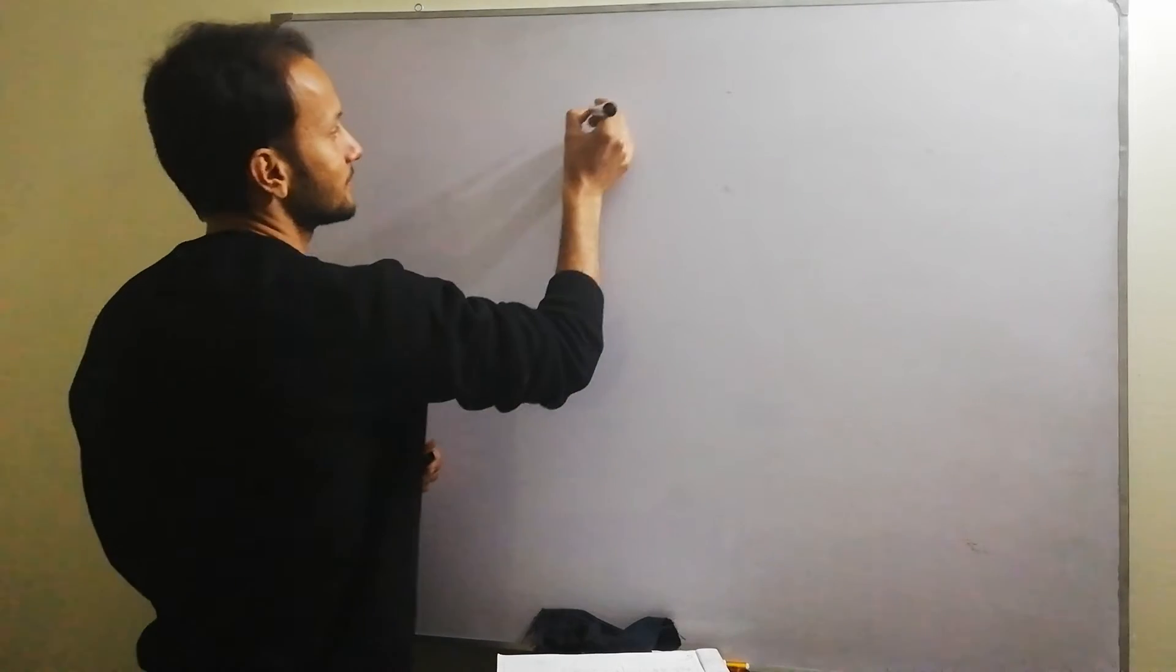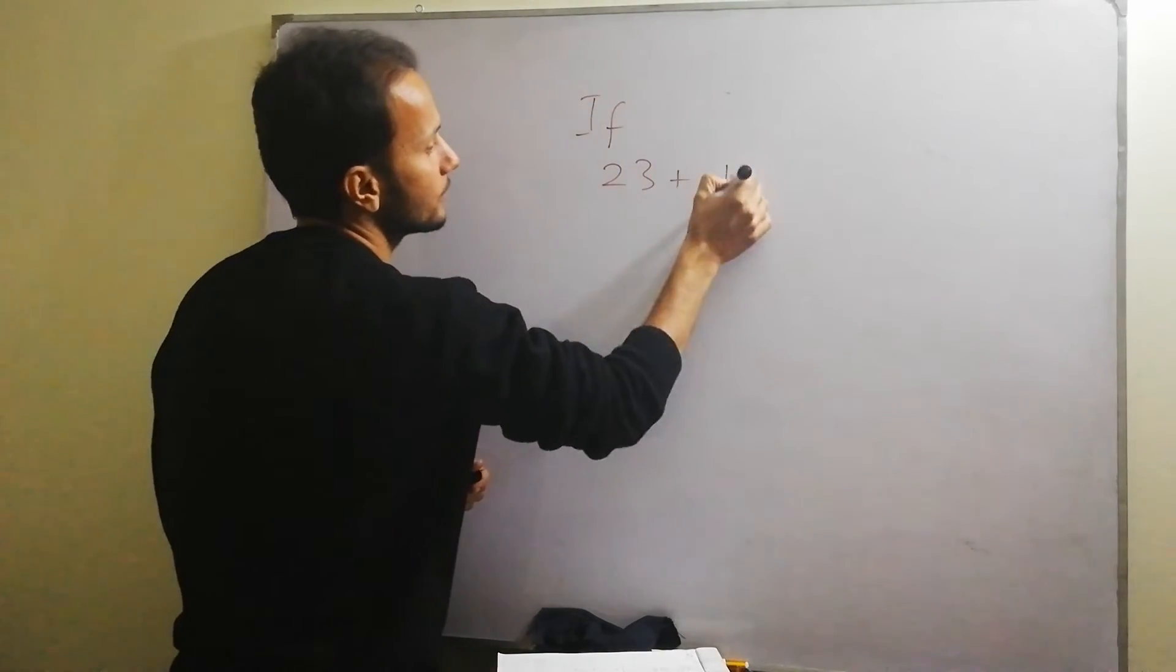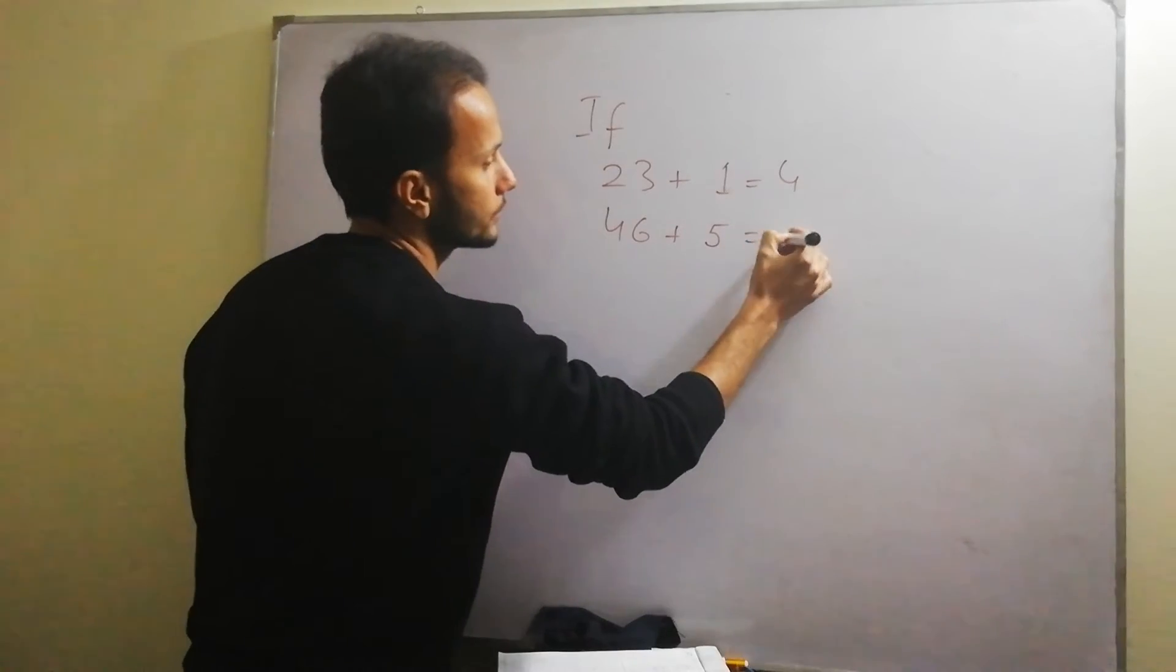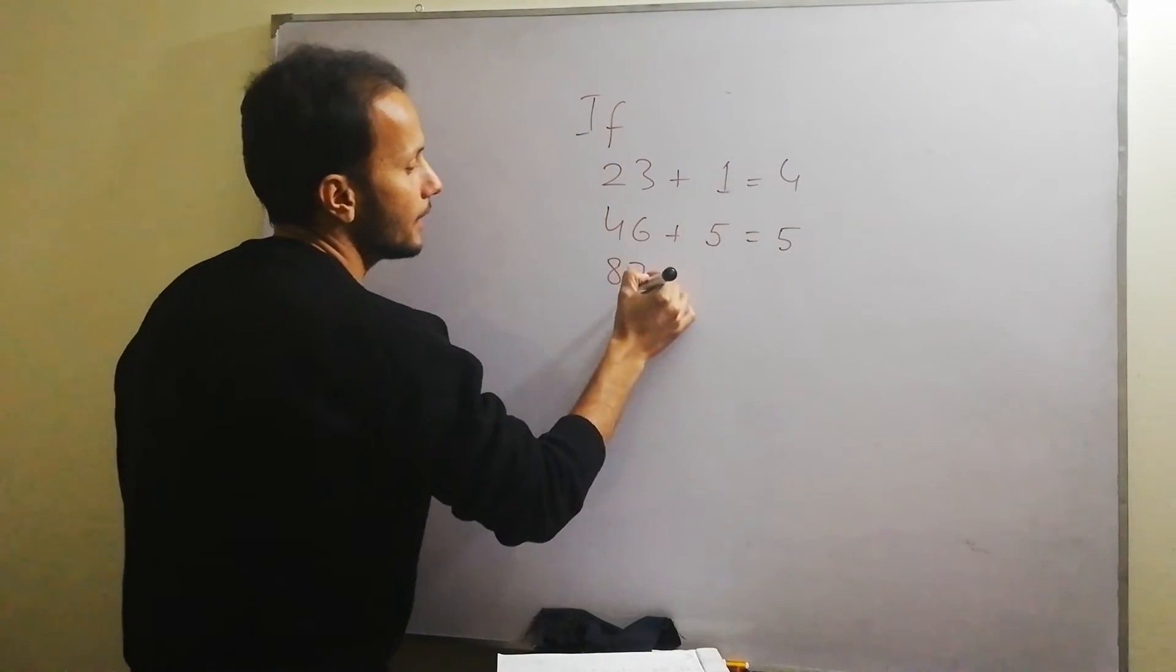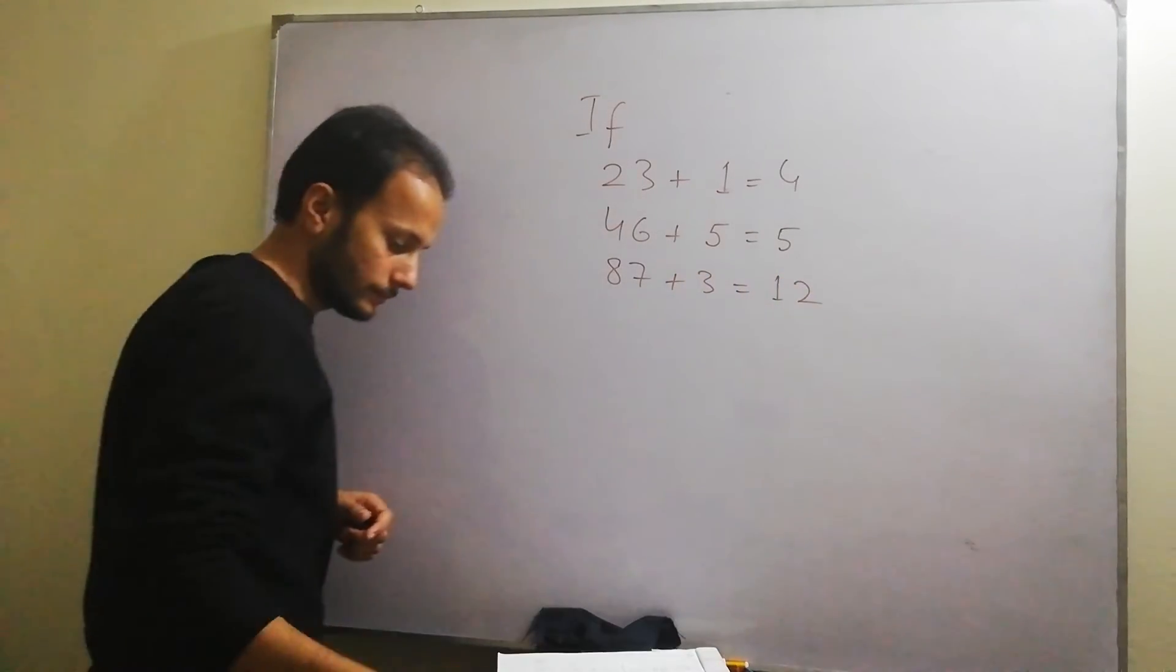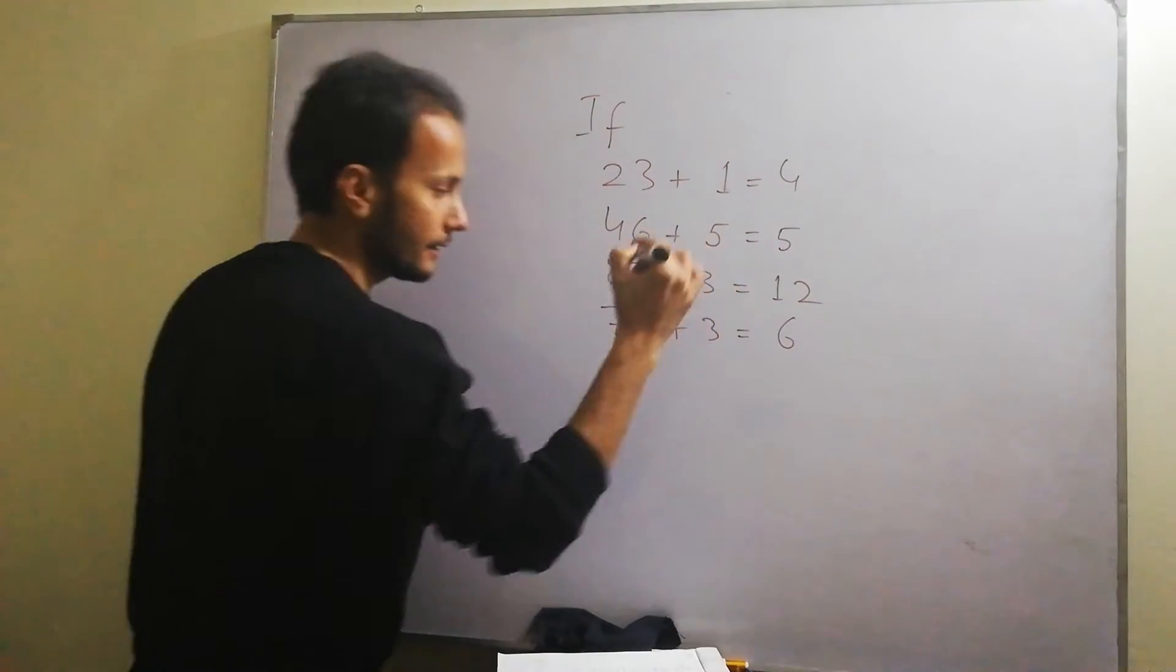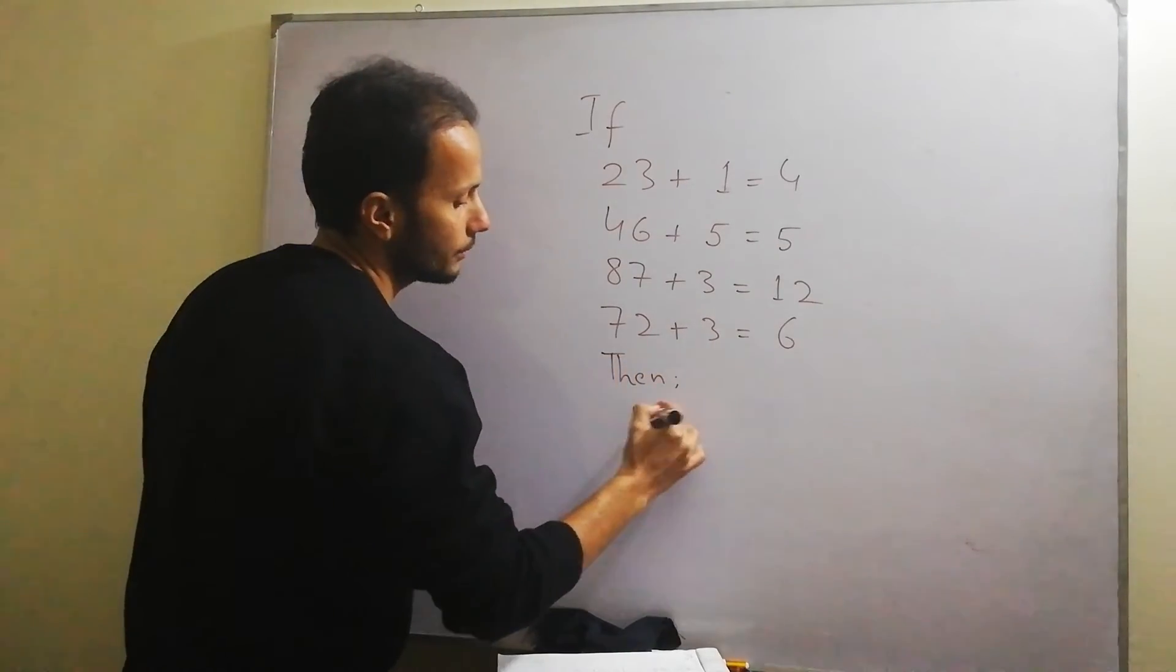The question is: if 23 plus 1 equals 4, and 46 plus 5 equals 5, 87 plus 3 equals 12, 72 plus 3 equals 6, then the question is: what will be 86 plus 7?